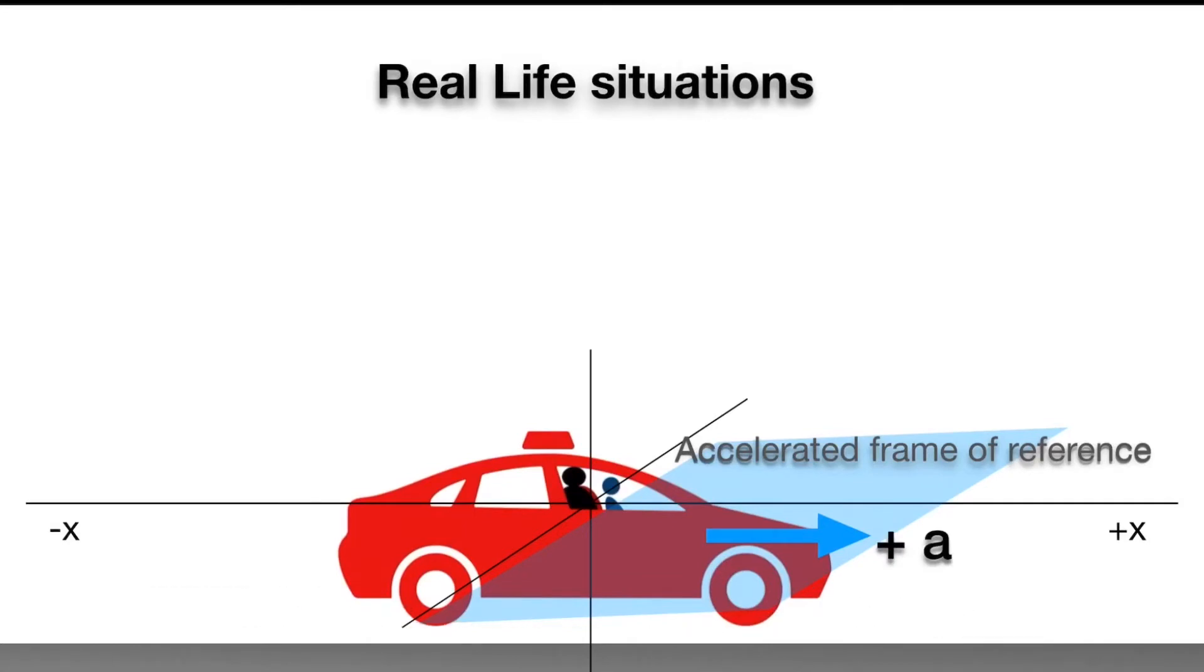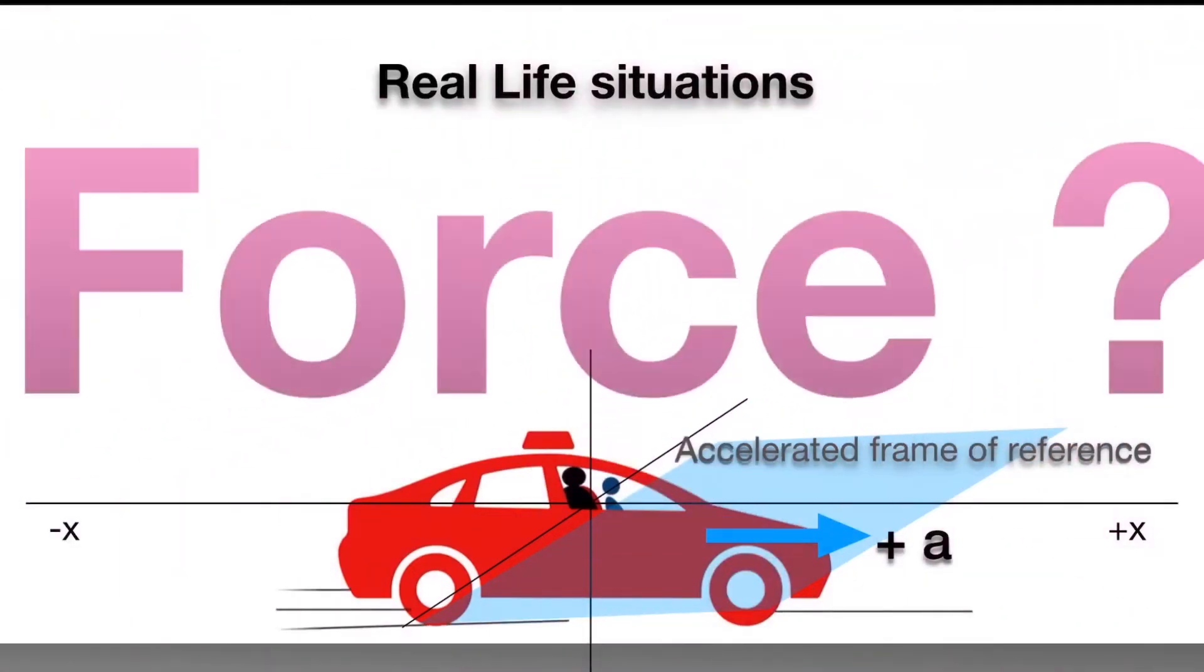The accelerated observer in the car will see that the outside trees are moving with the same acceleration but in opposite direction. Now question is who is forcing them to move?